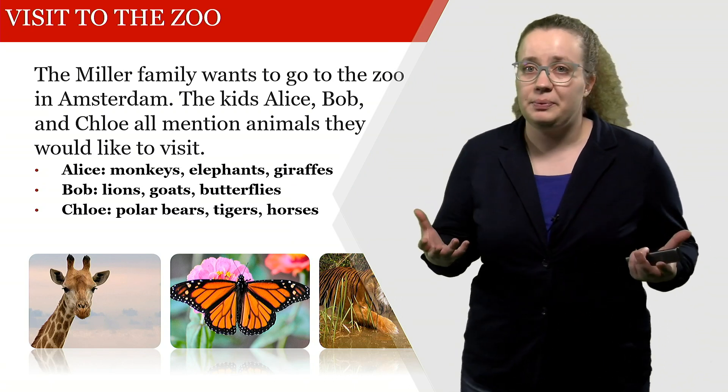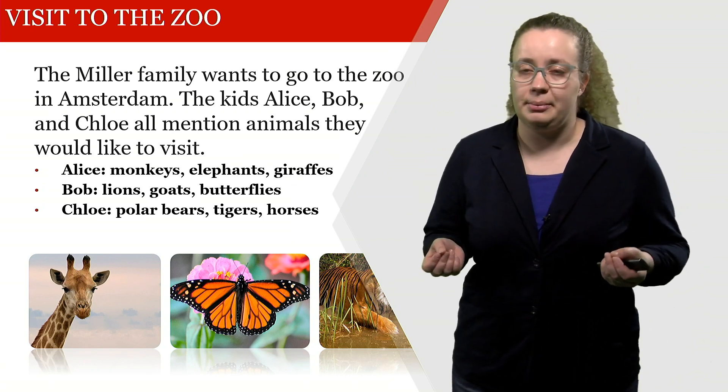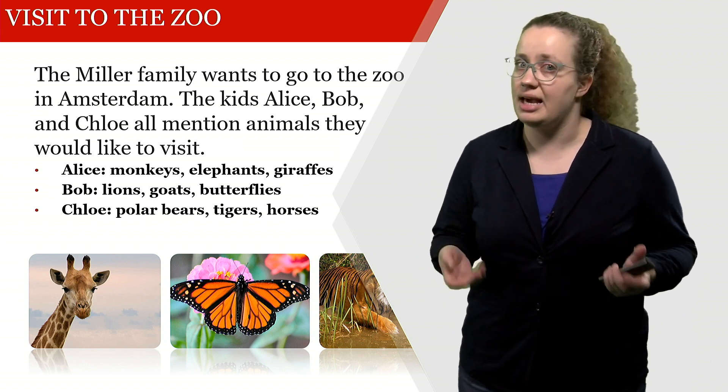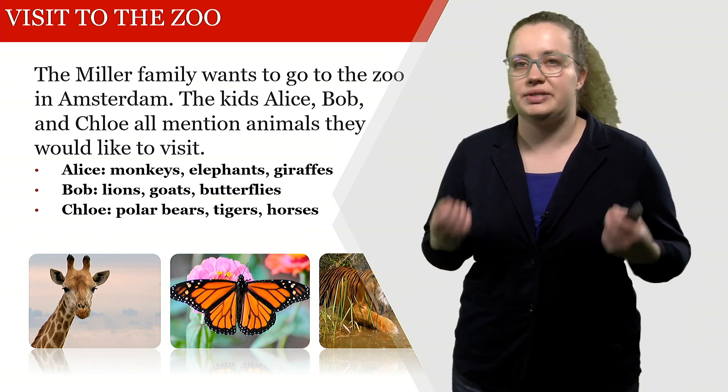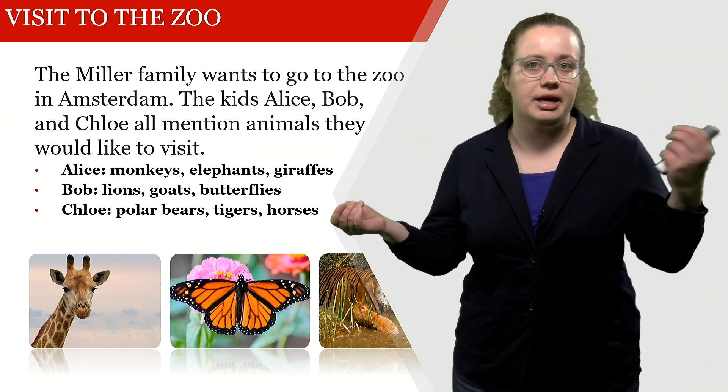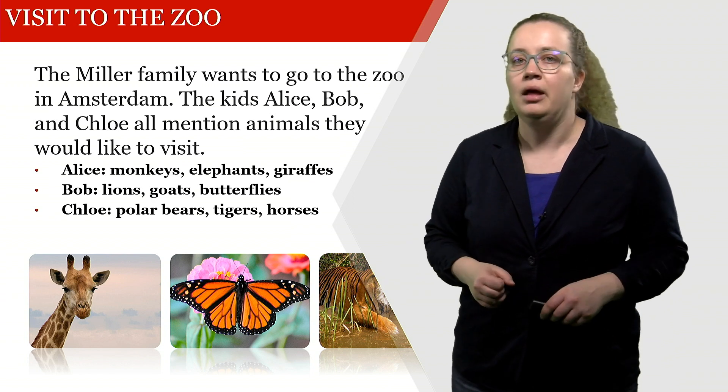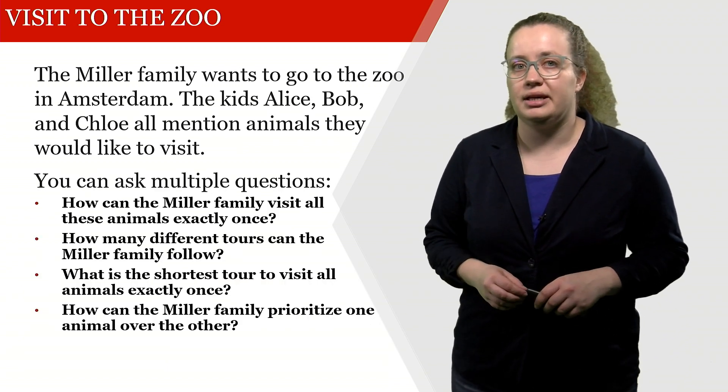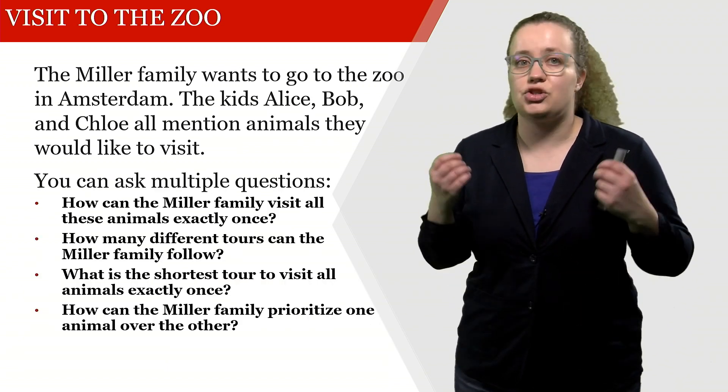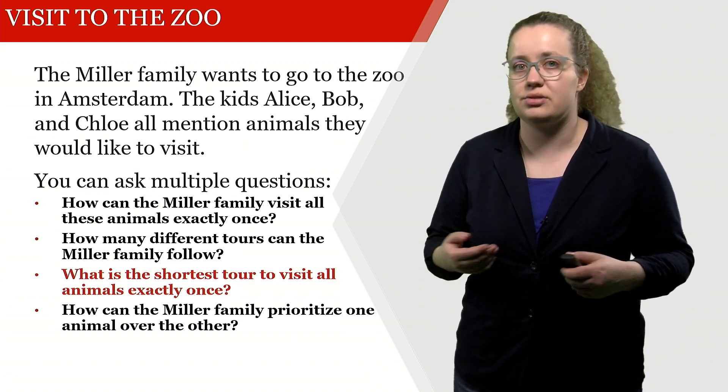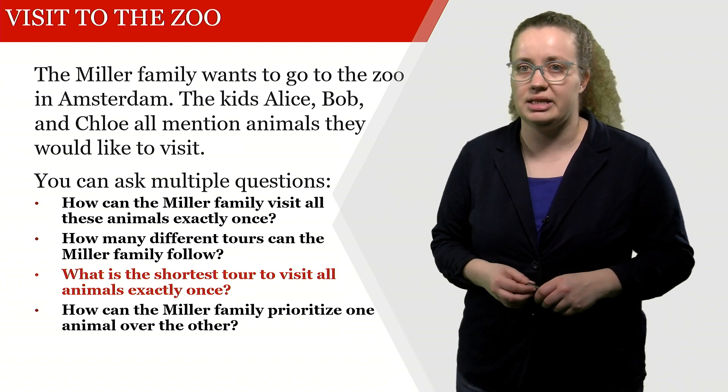The problem that we're looking at is the problem of the Miller family. The Miller family would like to visit the zoo in Amsterdam, and the kids Alice, Bob, and Chloe all said I would like to visit animal A, animal B. For example, Alice would like to visit monkeys, elephants, and giraffes. The parents of the Miller kids would like to find the shortest tour to visit all animals exactly once—all of those nine animals their kids mentioned.